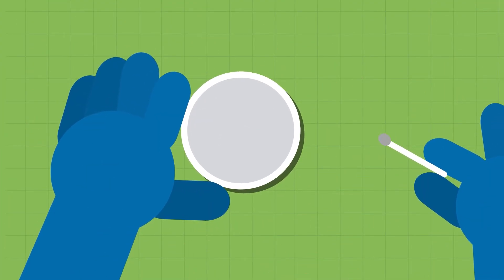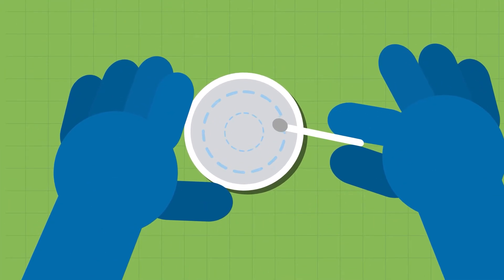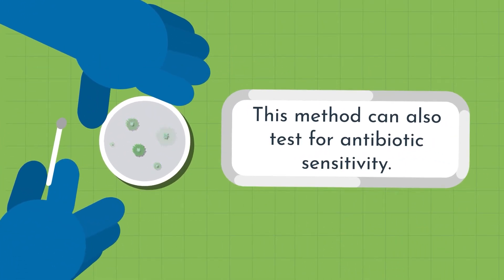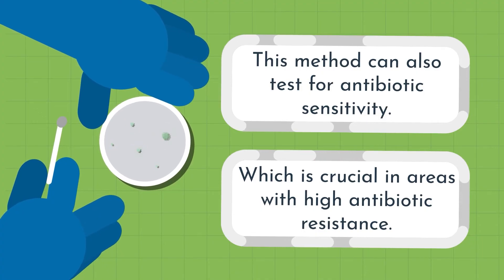Culture involves placing a biopsy sample in growth media to assess H. pylori growth. This method can also test for antibiotic sensitivity, which is crucial in areas with high antibiotic resistance.